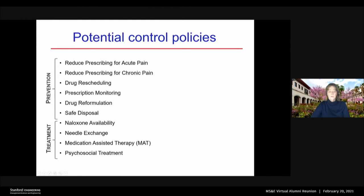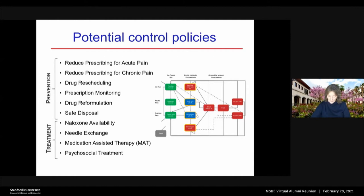There's also treatment. So for example, naloxone — the overdose rescue medication — needle exchange programs for drug injectors, which means giving people clean needles, medication-assisted treatment such as methadone or buprenorphine therapy, and psychosocial treatment, so-called rehab. What Alison did is she took these different policies for prevention and treatment, put them into her dynamic model to assess what would be the potential impact of any of these interventions alone or in combination.